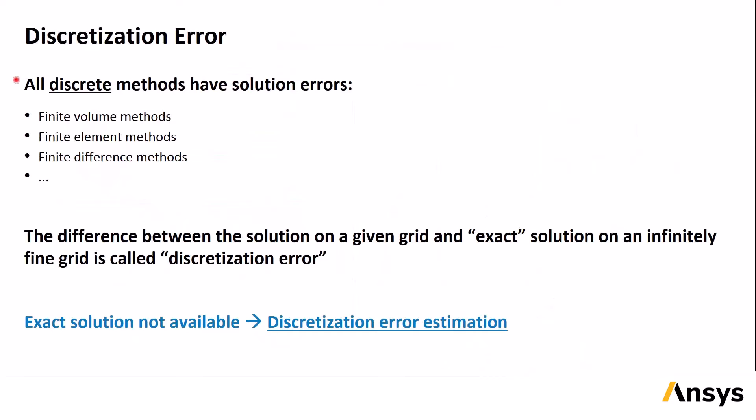Now we will talk about discretization errors. All discrete methods have solution errors, whether it's finite volume methods, finite difference methods, finite element methods, and so on. As the slide says, discretization error is defined as the difference between the solution on a given grid and the exact solution on an infinitely fine grid. Although the exact solution to a problem is generally not available except for a few academic cases, and an infinitely fine grid is generally not achievable, as we'll see next, there is still a way to estimate the discretization error by performing a mesh resolution study.